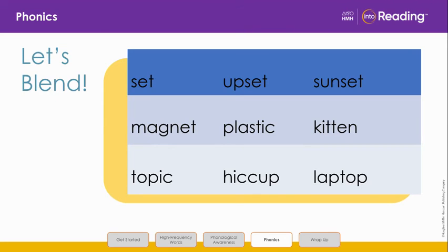Now let's practice reading some longer words. Line 1: set, upset, sunset. Line 2: magnet, plastic, kitten. Line 3: topic, hiccup, laptop.